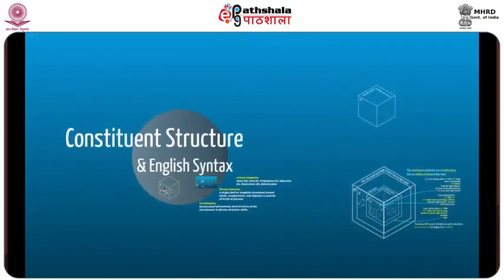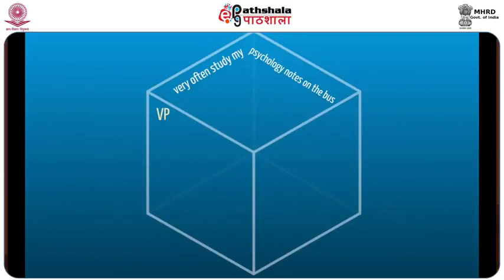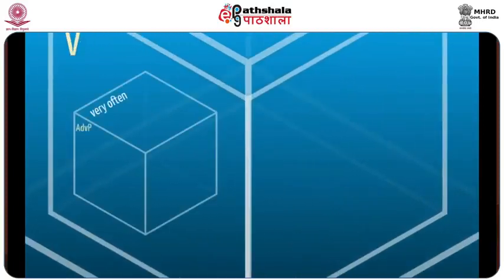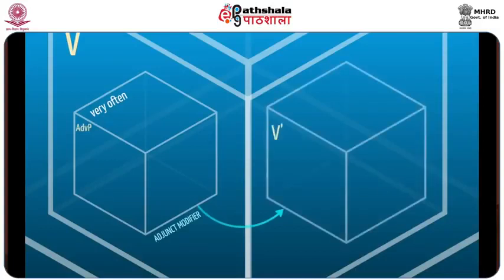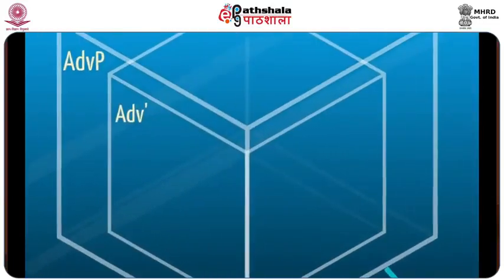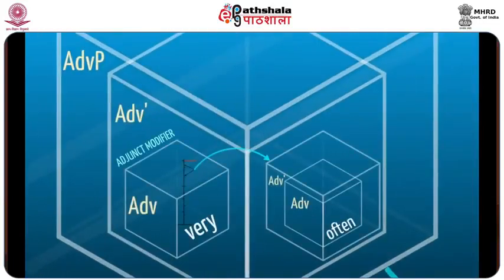Now we can see that verb phrases, or VPs, have the same kind of shell structure by examining a complex VP built around the verb 'study'. Let's go from the top down into the phrase: 'very often study my psychology notes on the bus'. This can be decomposed into the adjunct modifier of the whole VP, 'very often', and a subphrase of category V-bar consisting of the rest. Because it is typically a verb modifier and doesn't function as a complement, 'often' is best analyzed as an adverb. It forms a constituent with the degree adverb 'very', which like all adjunct modifiers combines with a bar-level phrase.